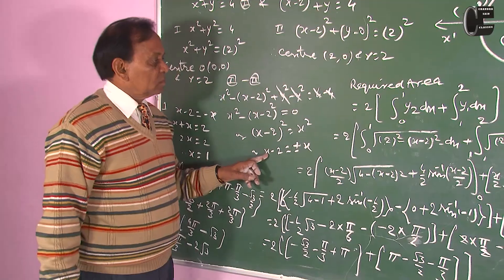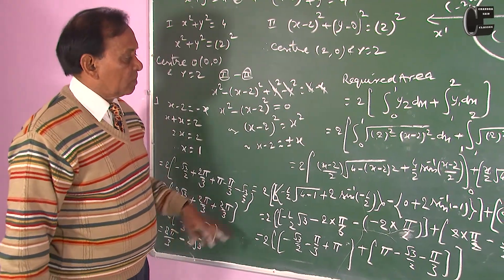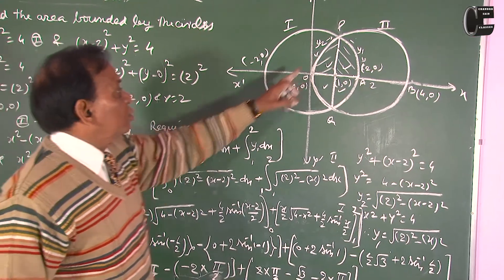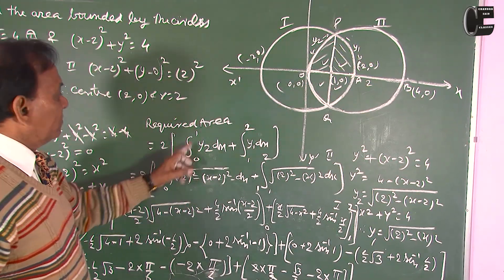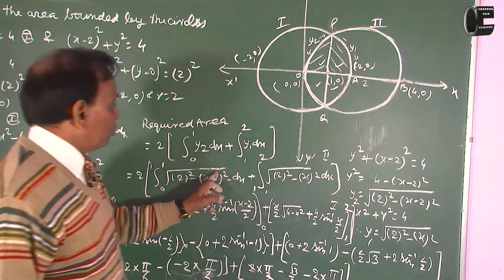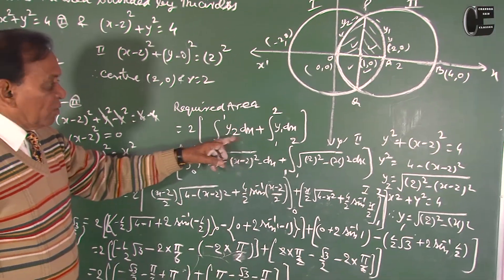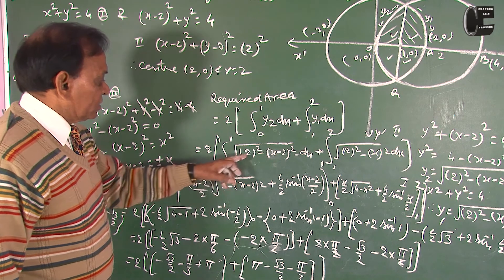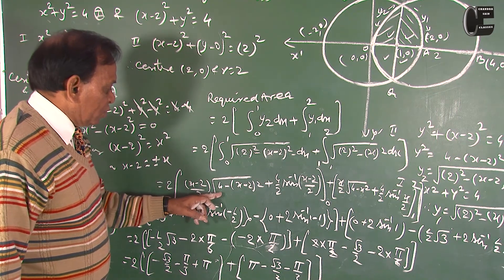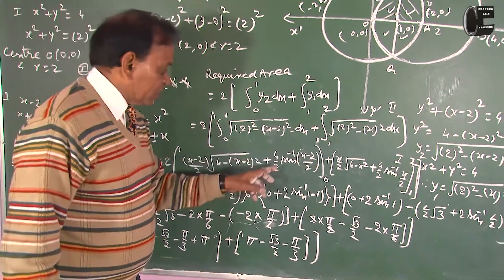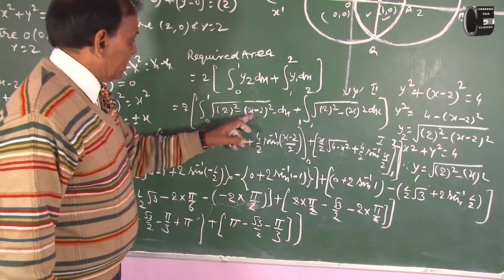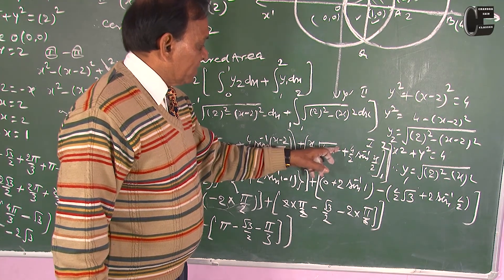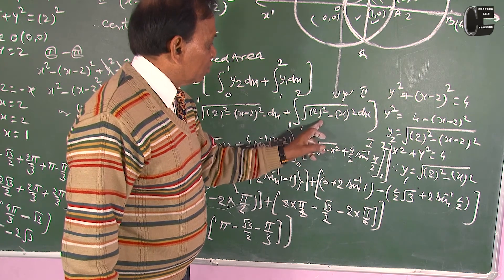For y₂, put under root of 2 squared minus (x minus 2) squared, and for the first circle y₁ will be under root of 2 squared minus x squared. The integration will be: (x minus 2)/2 times under root of 4 minus (x minus 2) squared plus 4/2 times sin inverse of (x minus 2)/2. Similarly, the second integration is x/2 times under root of 4 minus x squared plus 4/2 times sin inverse of x/2, with limit 1 to 2.